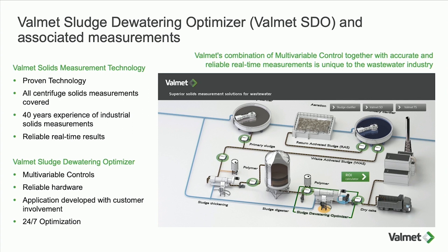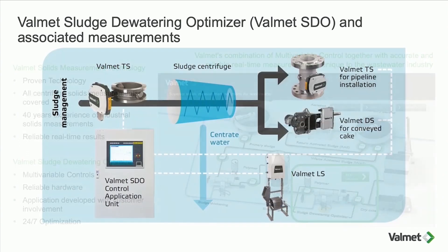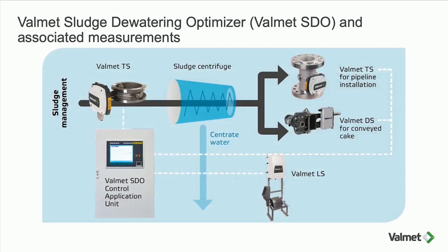We also have clever multi-variable controllers used within the pulp and paper industry, which we've developed so we can optimize and control the centrifuge in the wastewater process. The overall system is a combination of measurements and controls: solids measurements around the centrifuge — incoming, dry cake, and centrate — plus a control package with a multi-variable controller to optimize the centrifuge by automatically changing set points for polymer dosing, torque, and mass flow.